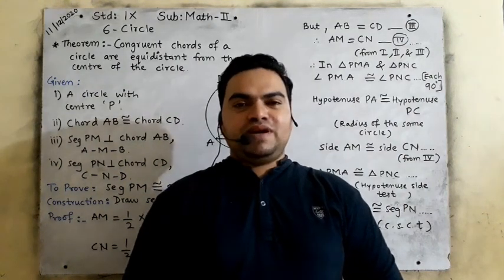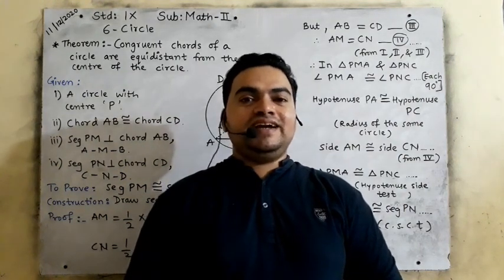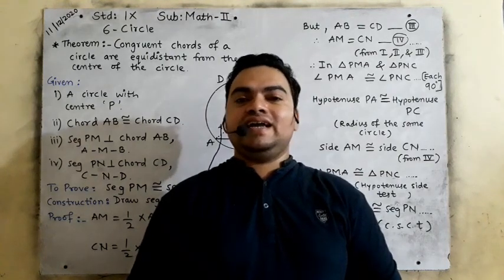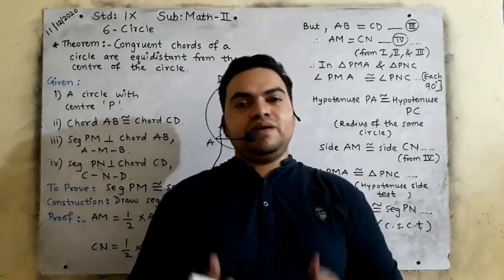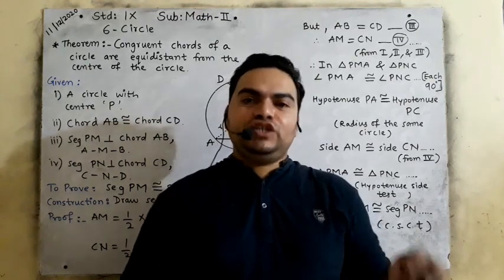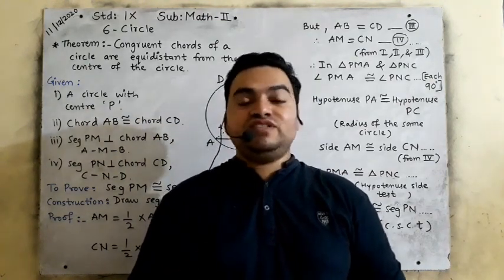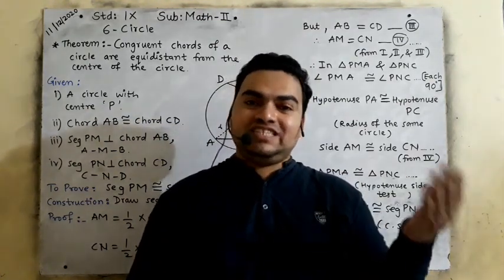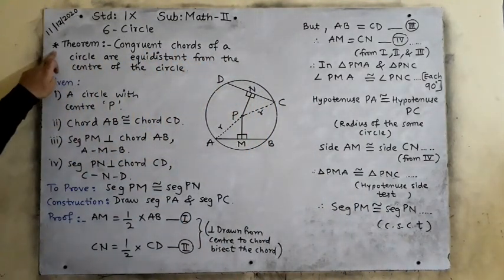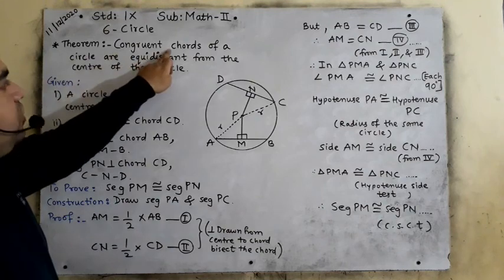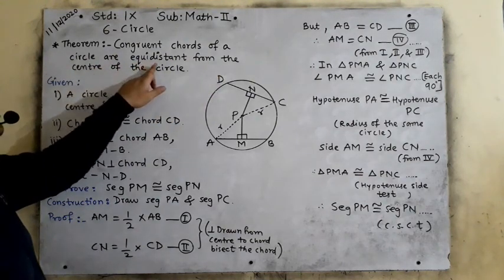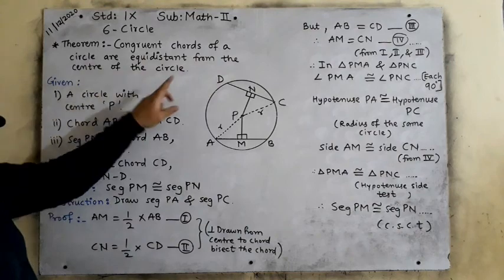Hello everyone, this is Imran Pardesi sir and today I will be starting the new topic of standard 9th math, 2nd chapter, number 6 circle. Before starting 6.2, we will go through the theorem which is very important to solve the 6.2 exercise. Please look at the book. The theorem is: congruent chords of a circle are equidistant from the center of the circle.